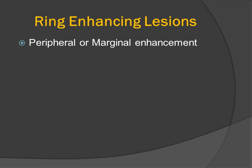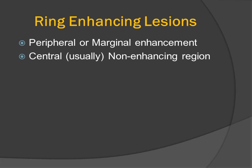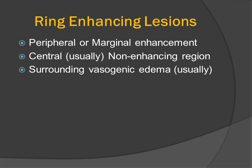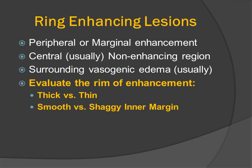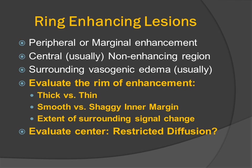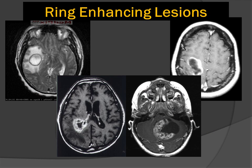A ring-enhancing lesion has peripheral or marginal enhancement that surrounds a usually central non-enhancing region. There is often surrounding vasogenic edema. We can evaluate the rim of enhancement to see if it is thick or thin, smooth versus a shaggy inner margin, look at the extent of surrounding signal change, and evaluate the center for possible diffusion restriction.